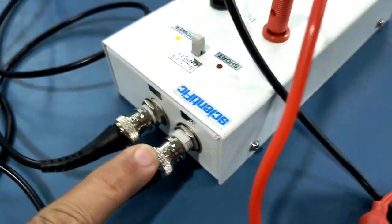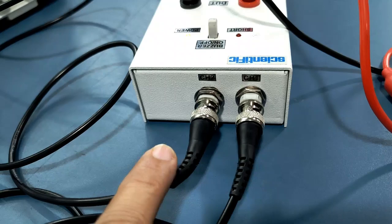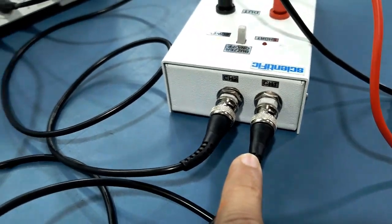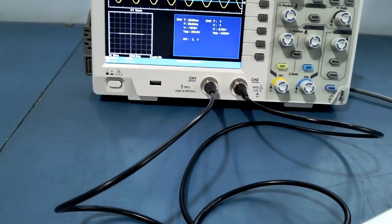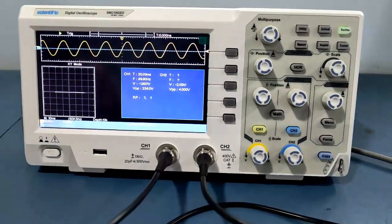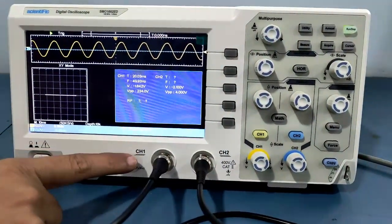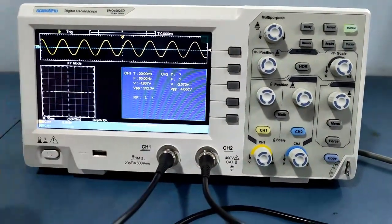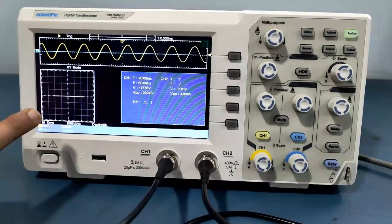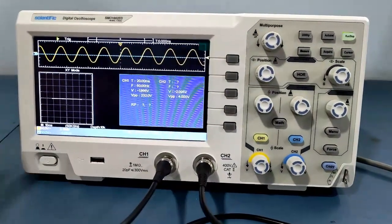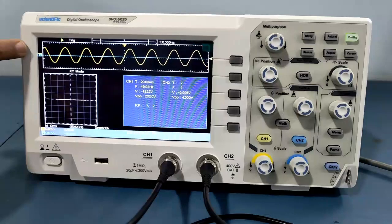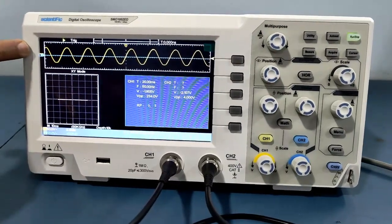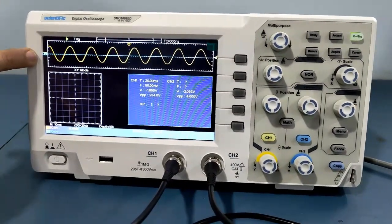Two channels are provided: Channel 1 and Channel 2. Channel 1 connects to DSO Channel 1 and Channel 2 connects to DSO Channel 2. We have connected both channels. For component testing, we have set the DSO to XY mode. The yellow line is Channel 1 and the blue line is Channel 2.